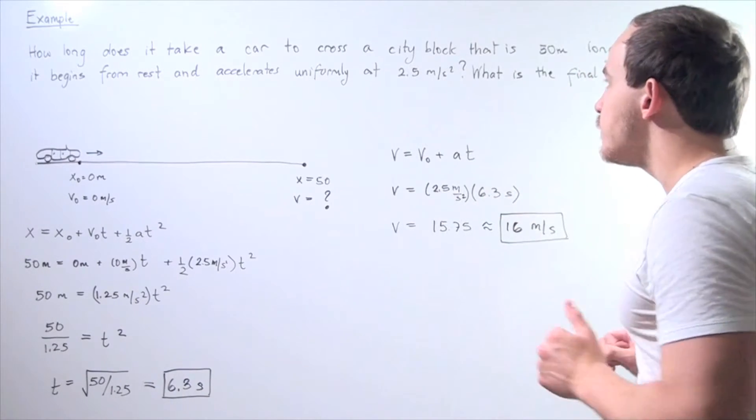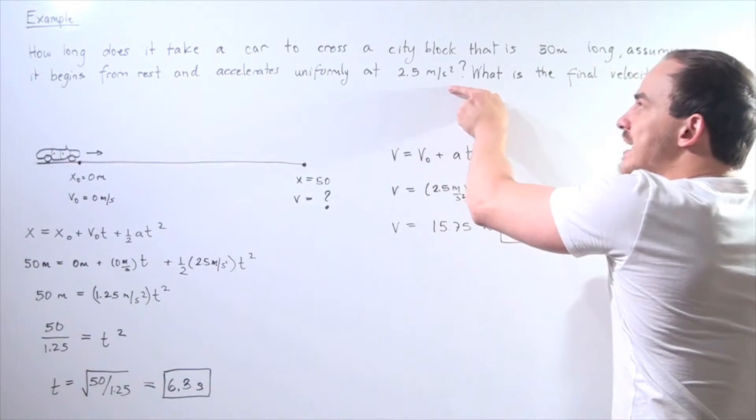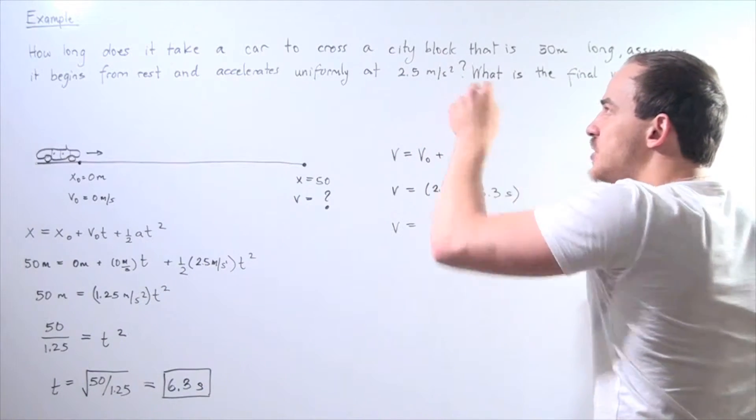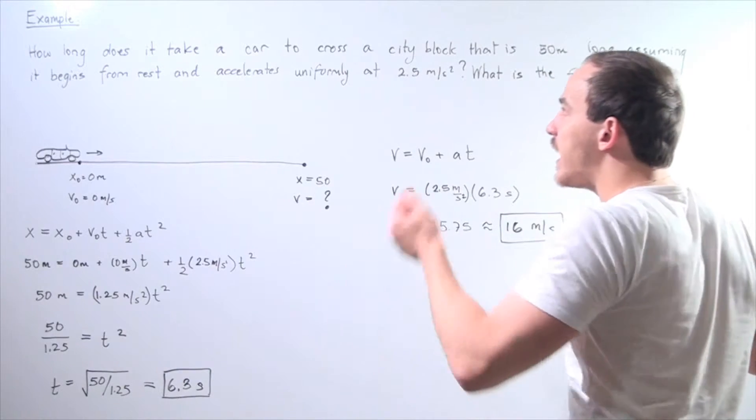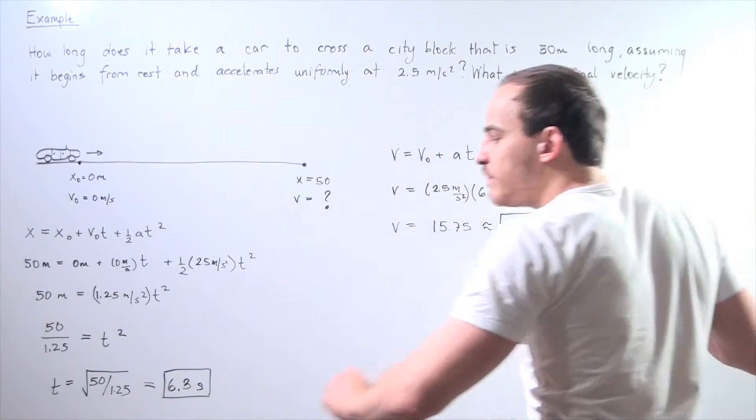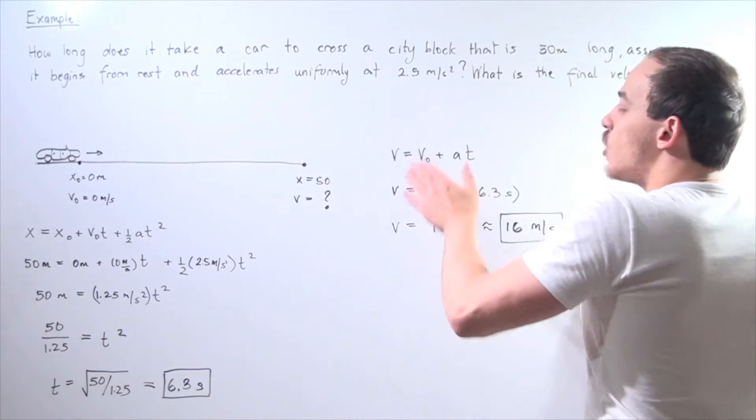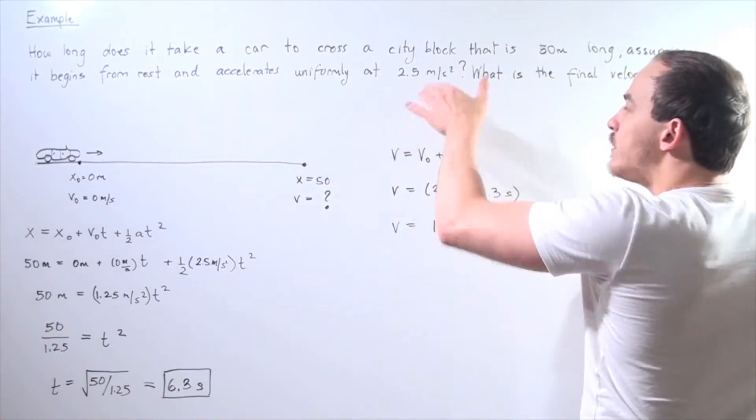Said another way, what this means is this is the rate of change of our velocity. Our velocity is changing every second, increasing by an amount of 2.5 meters per second. So, if we travel for 6.3 seconds, we simply multiply these two and we get our number.